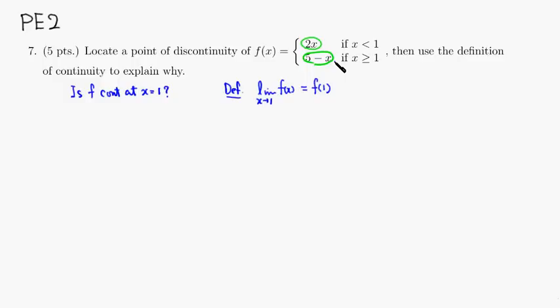We need to evaluate this limit, but since there are two different formulas, we need to look at the one-sided limit. So we're going to look at the limit of this function f of x as x approaches 1 from the left, and also the limit of f of x as x approaches 1 from the right.